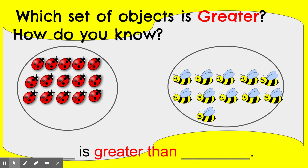Let's do some practice. Which set of objects is greater, and how do you know? Here we have some ladybugs and we have some bees. Let's practice counting our ladybugs: one, two, three, four, five, six, seven, eight, nine, ten, eleven, twelve, thirteen, fourteen, fifteen ladybugs. Now let's see how many bees we have. Notice I'm touching and counting each one to make sure I count them correctly, using my touch-and-count strategy. One, two, three, four, five, six, seven, eight, nine, ten, eleven. So we have fifteen ladybugs and eleven bumblebees.